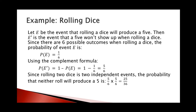Using the complement formula, the probability of the complement of E equals 1 - P(E), which is 1 - 1/6, equal to 5/6. Since rolling two dice are two independent events, the probability that neither roll produces a 5 is 5/6 multiplied by 5/6, which equals 25/36.